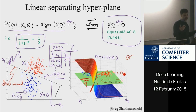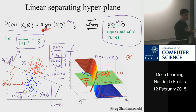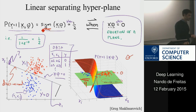Our model is still intrinsically linear because the decision boundary is still linear, but now it has this extra squashing function that we need to deal with. So the question is: how do we learn θ? Is it easy or is it hard?